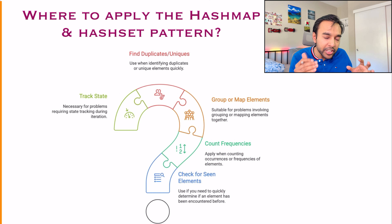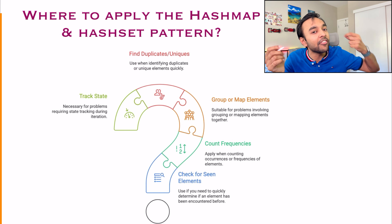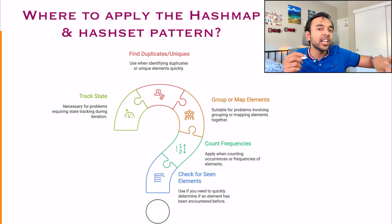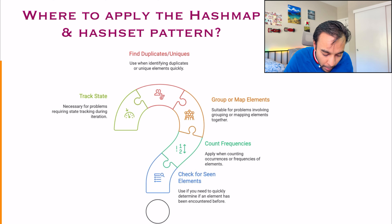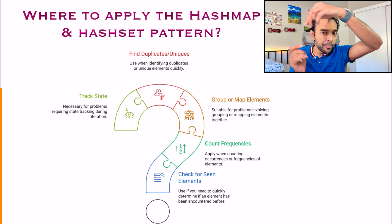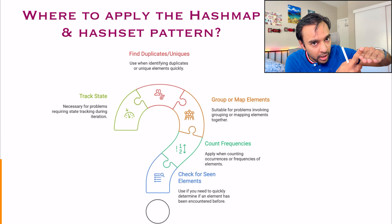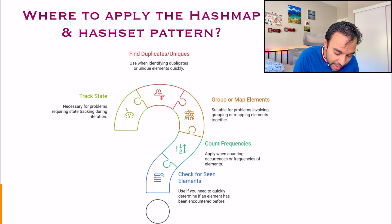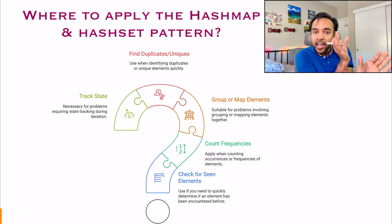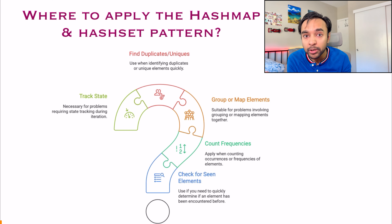So how do we identify if you can apply the hash map or hash set pattern? Go over the problem statement and ask yourself some questions. If you have to find duplicates, that is a very good indicator you need a hash set — in constant time you can determine if a number has been duplicated. Similarly, if you want to count frequencies — for example, how many times a character appears in a string — you need a hash map to store and look up those frequencies in O(1) time.